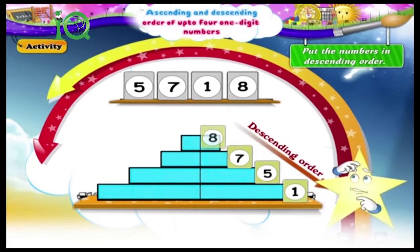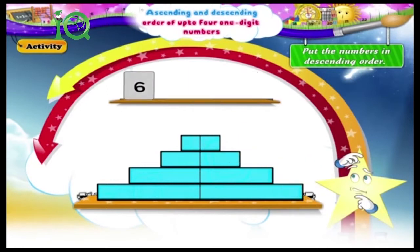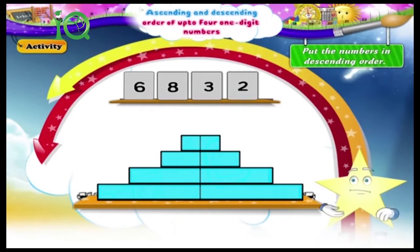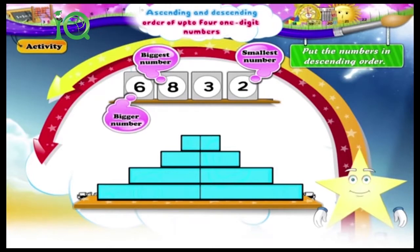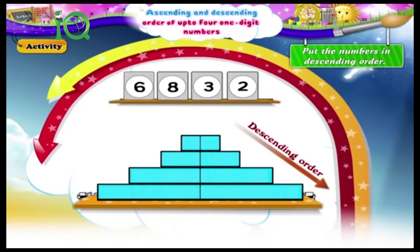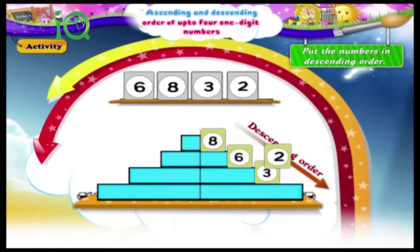Starry, what about six, eight, three, two? Yes. The biggest number is eight. And the smallest number is two. Between six and three, six is the bigger number. The numbers arranged in descending order are eight, six, three, two.